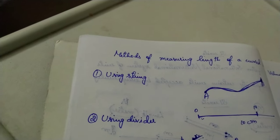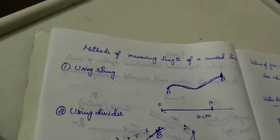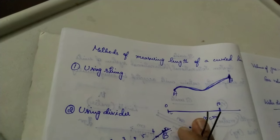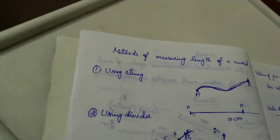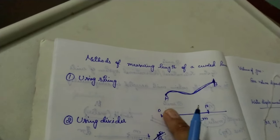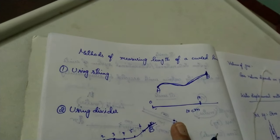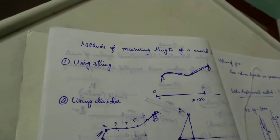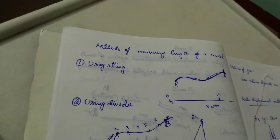These are the two methods which are very simple. Please don't memorize — please understand. The aim is to measure the length of a curved line: first using string, second using divider. Materials required: a thread or string, a pen, and a ruler. For the divider method, you need a divider. Procedure: draw a curved line AB, place the string exactly over the line, mark the end of the line using a sketch pen, then place it over the ruler and measure the length of the string — that gives the length of the curved line.